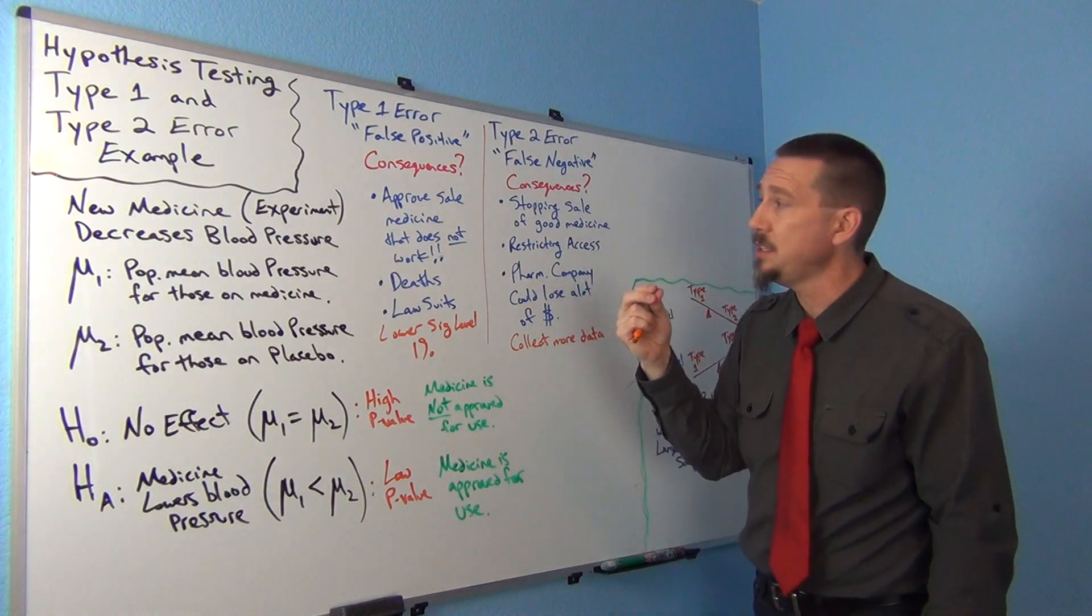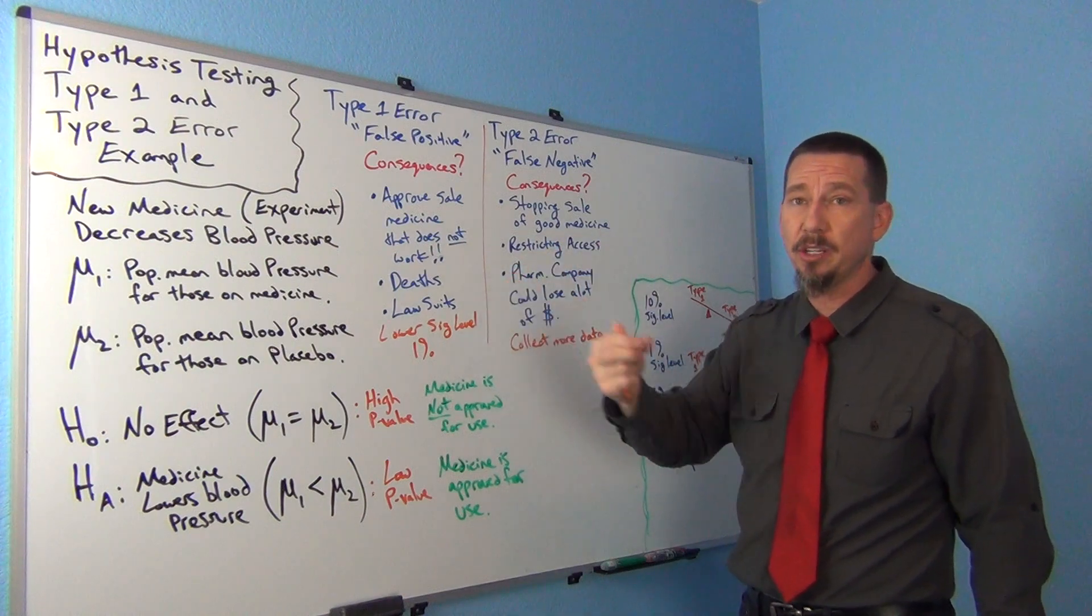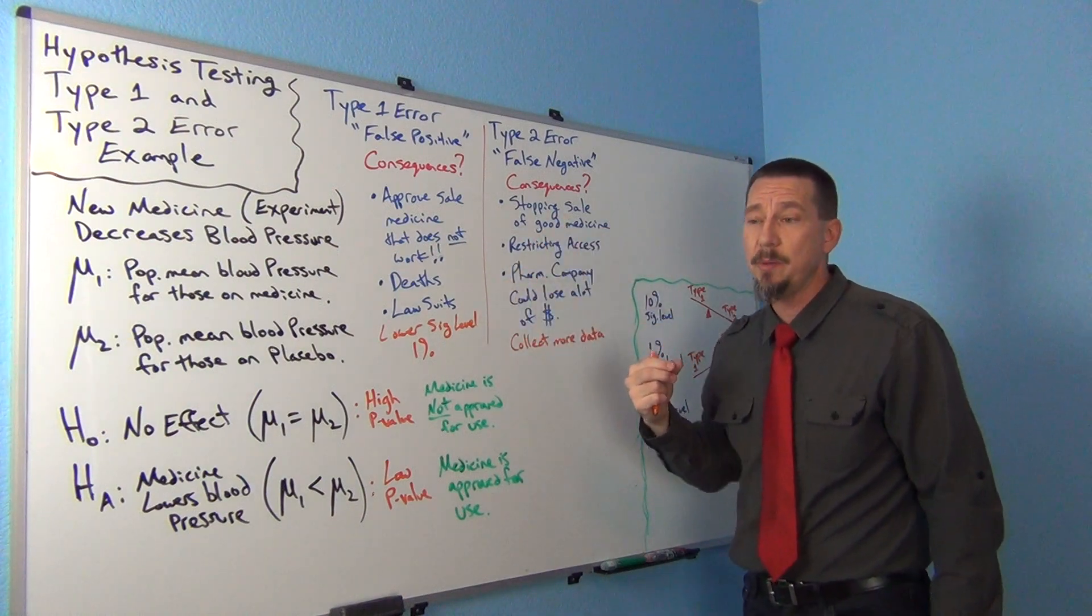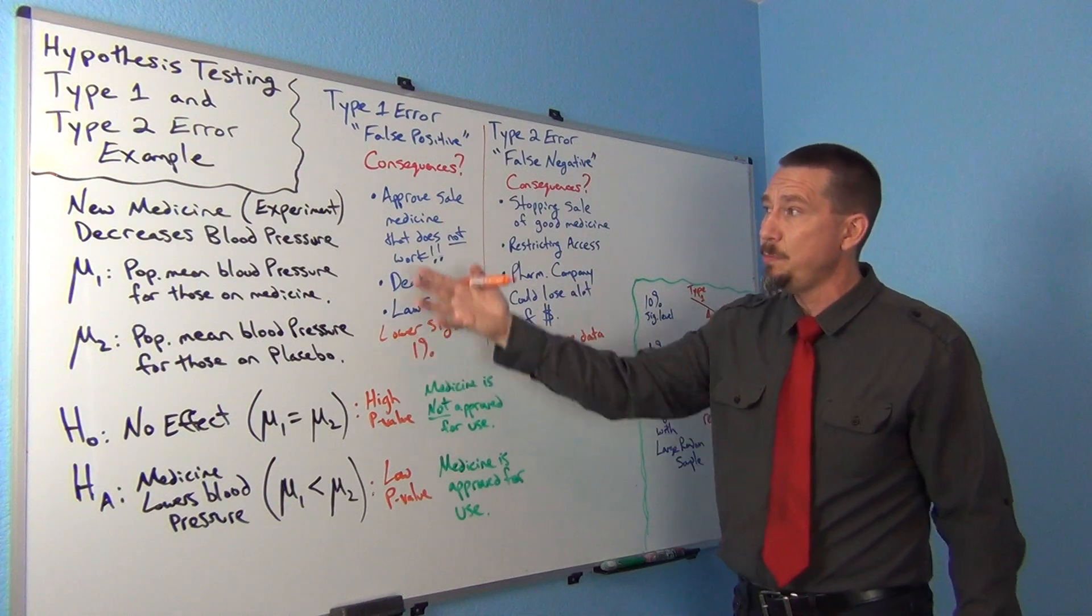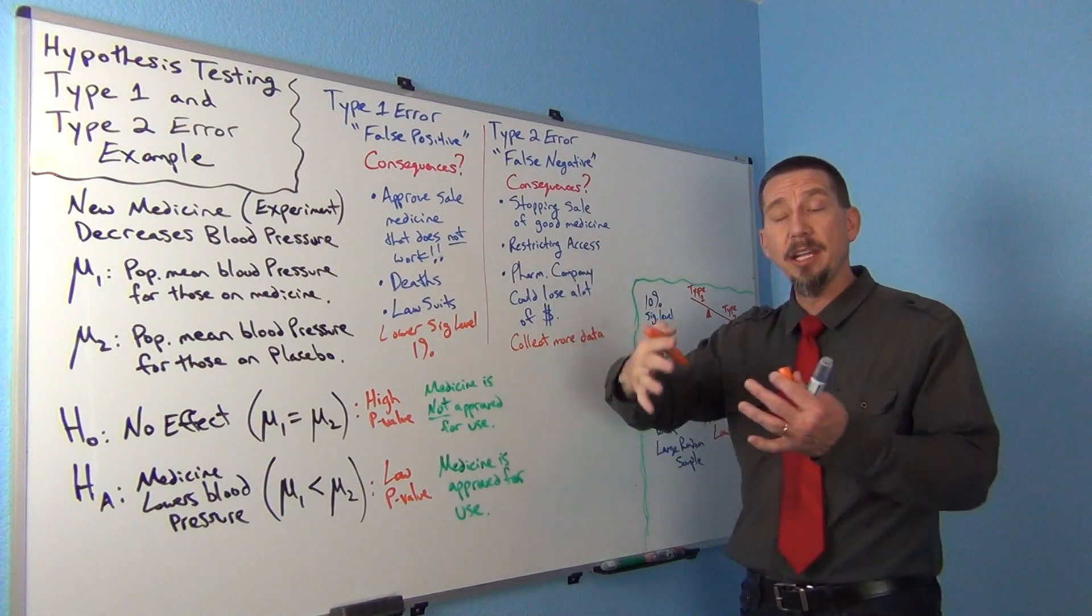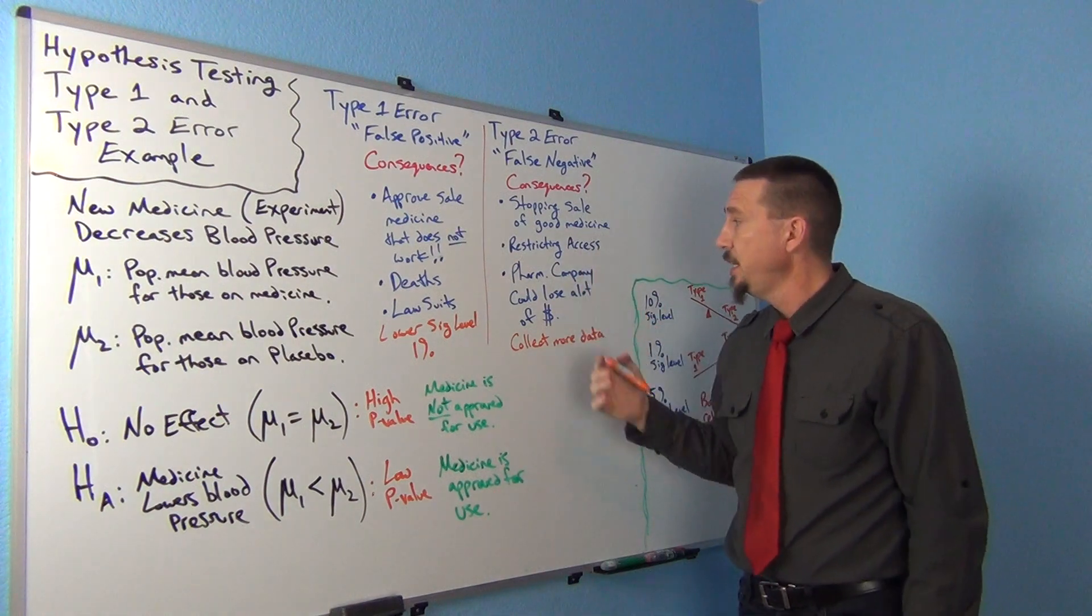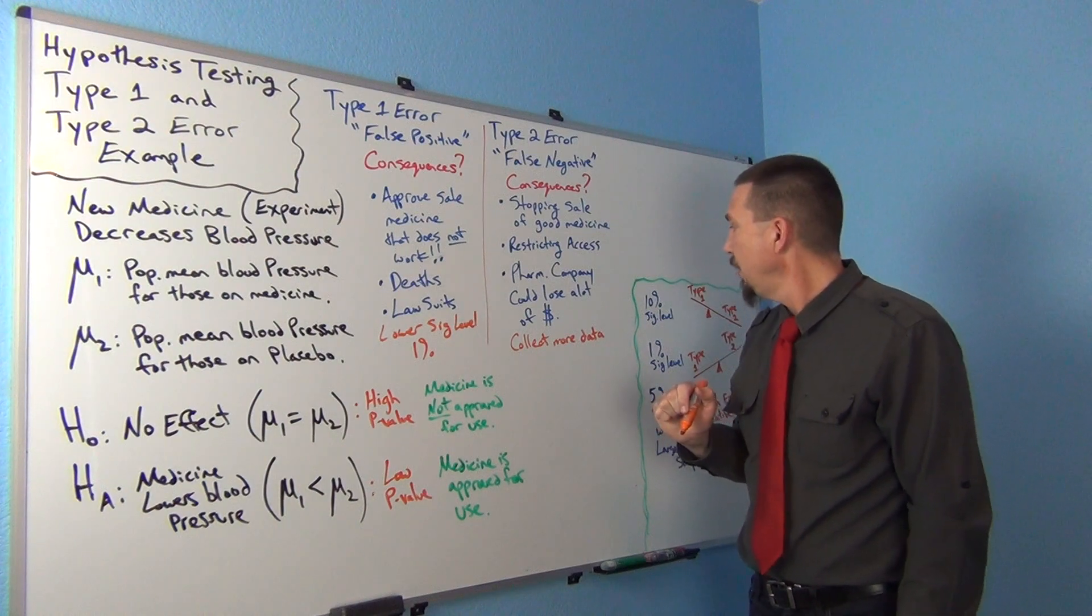In a lot of ways, Type 1 and Type 2 errors are about thinking through consequences. If you get this wrong, you can imagine governments oftentimes have to make decisions that affect their entire population. So the government makes a decision based on random sample data and they get it wrong, that could have really bad consequences. That's what this is all about.